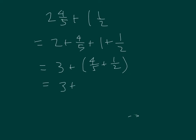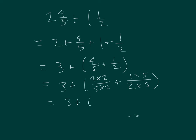Finding like units, we use tenths as our common denominator. We rename 1 half as 5 tenths and 4 fifths as 8 tenths. So we have 3 plus 8 tenths plus 5 tenths, which equals 3 plus 13 tenths.